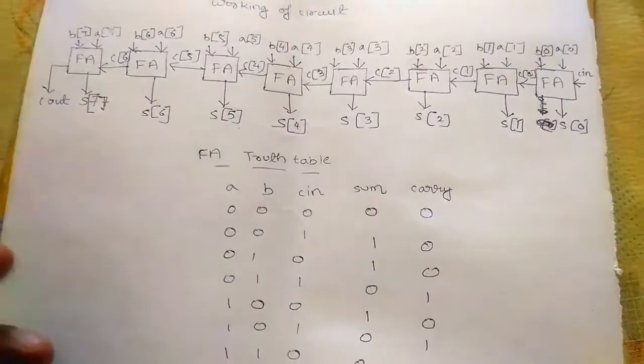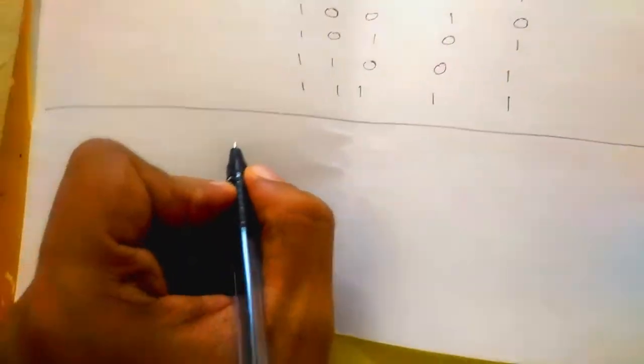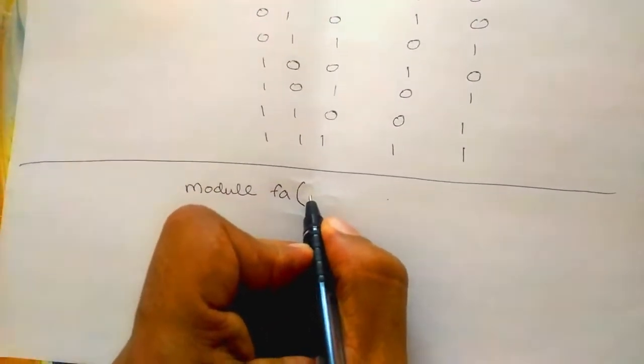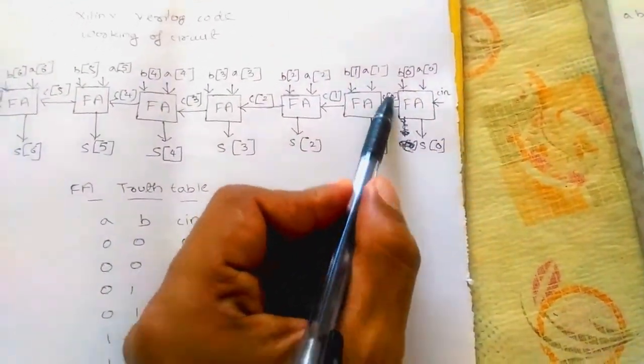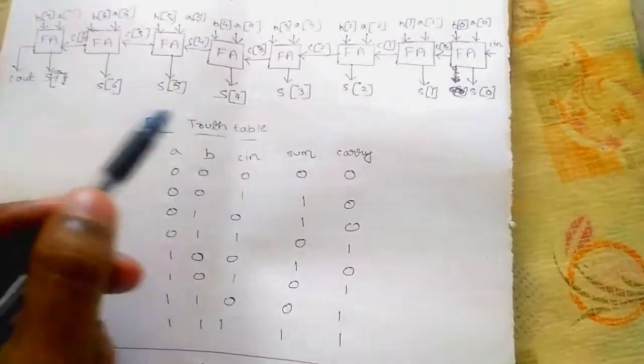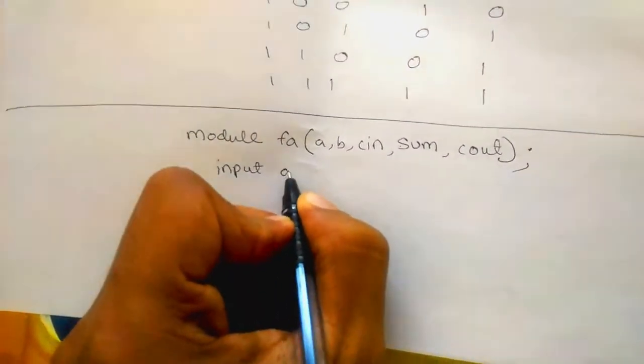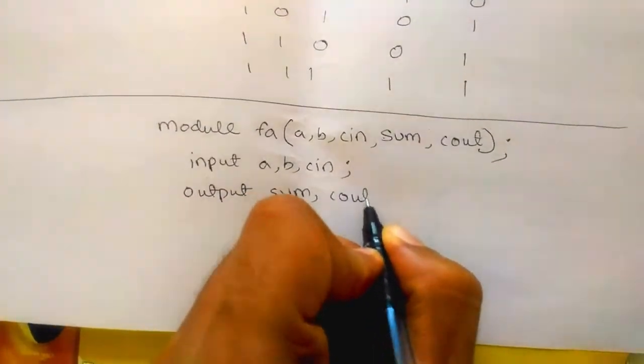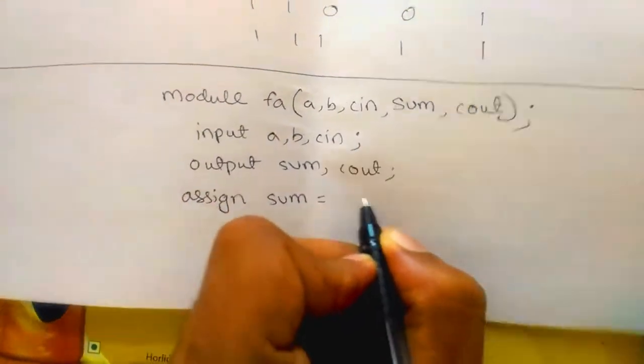Here we are using variables a, b, sum, carry, cin and cout. First of all we have to write module for a full adder using structural model. Module full_adder with inputs a, b, cin and outputs sum and cout. Input a, b and cin are the inputs. Outputs are sum and cout.